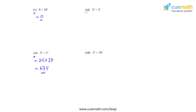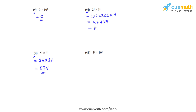Coming to the seventh bit, we have 2 raised to 4, that is 2 times 2 times 2 times 2, and then 3 squared which is 9. We get it as 4 times 4 times 9. So 4 fours are 16, and 16 times 9 gives us 144 as the answer after simplification.